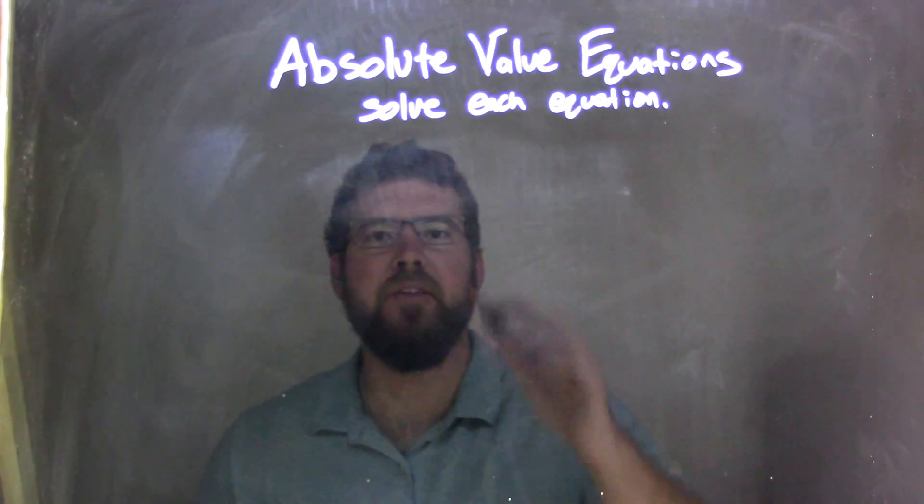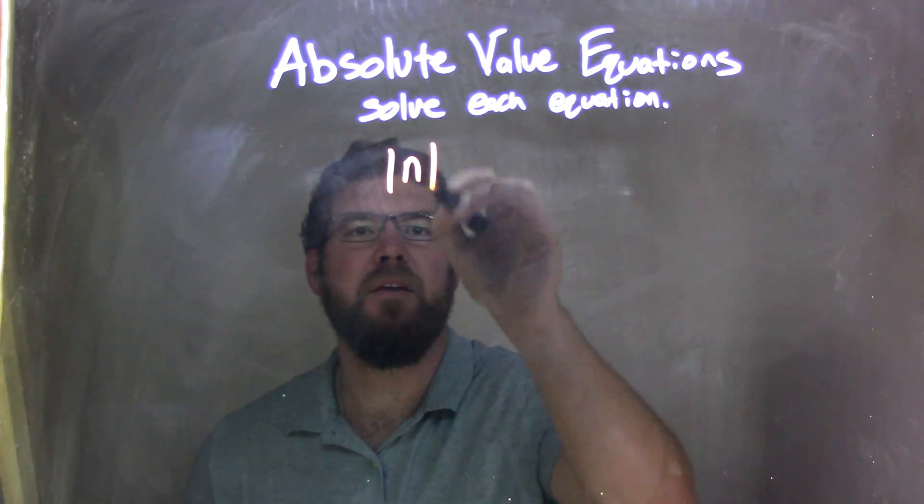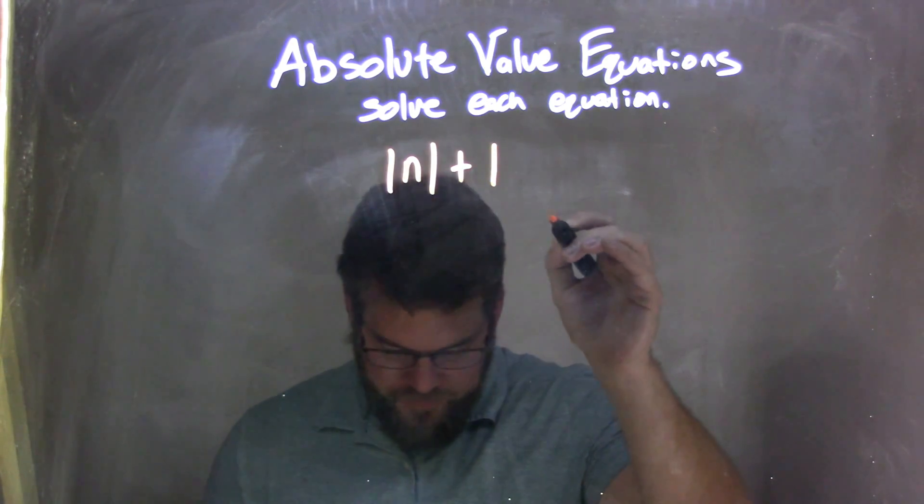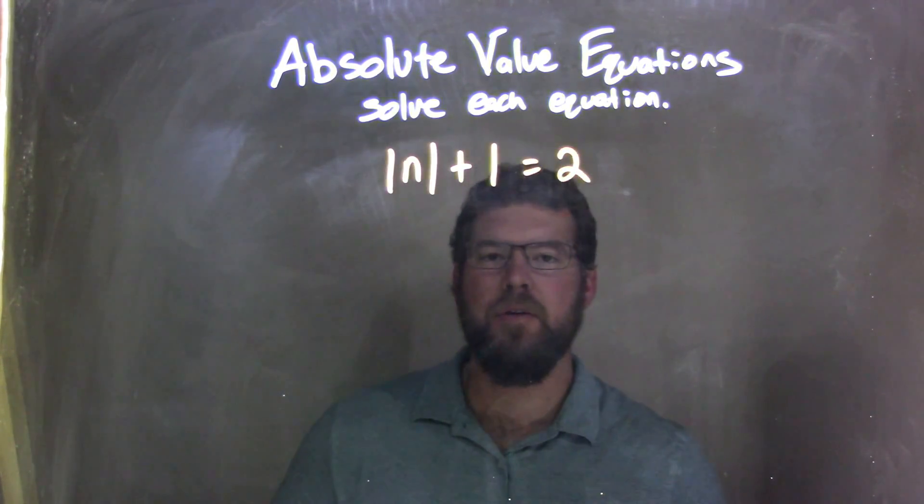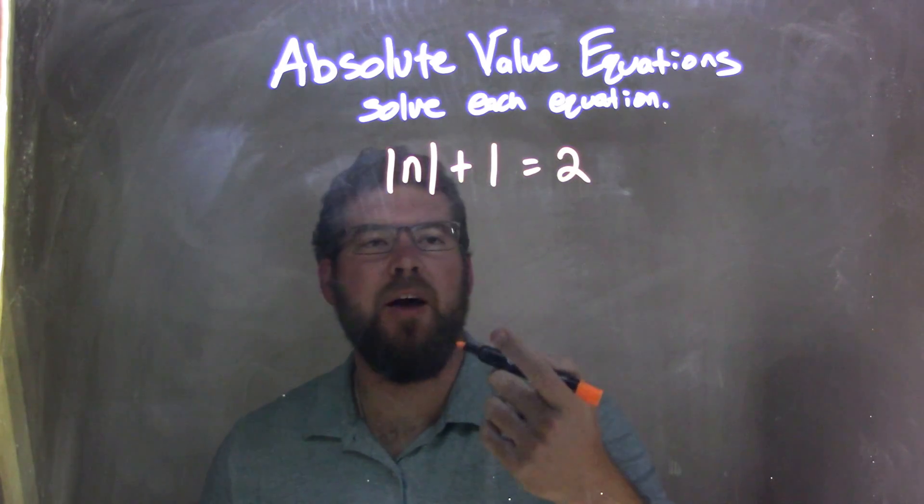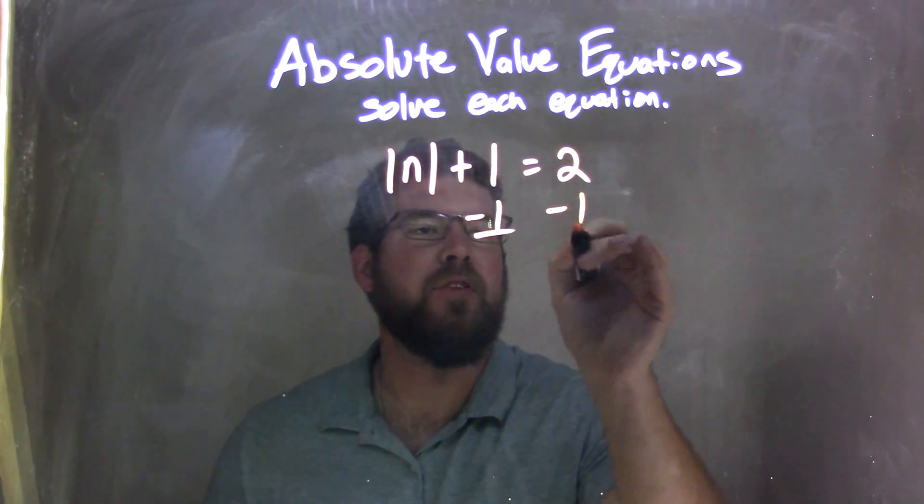If I was given this equation, absolute value of n plus 1 equals 2. Well, first step, get the absolute value by itself. Subtract the 1 on both sides.